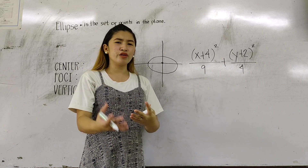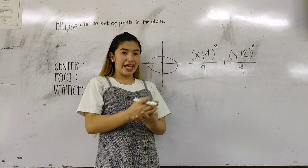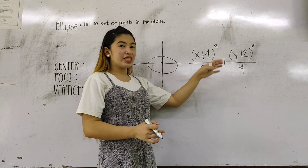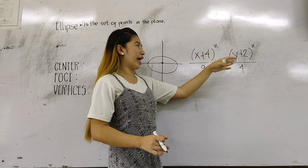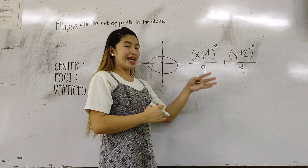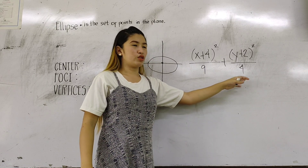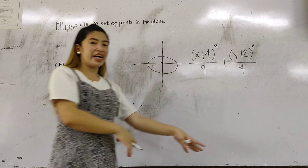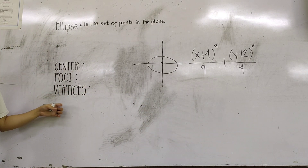As we all know, in standard form we have H and K, and A and B. So here, the H and K are 4 and 2, while A squared is 9 and B squared is 4. We will use this given equation to find the center, the foci, and the vertices.